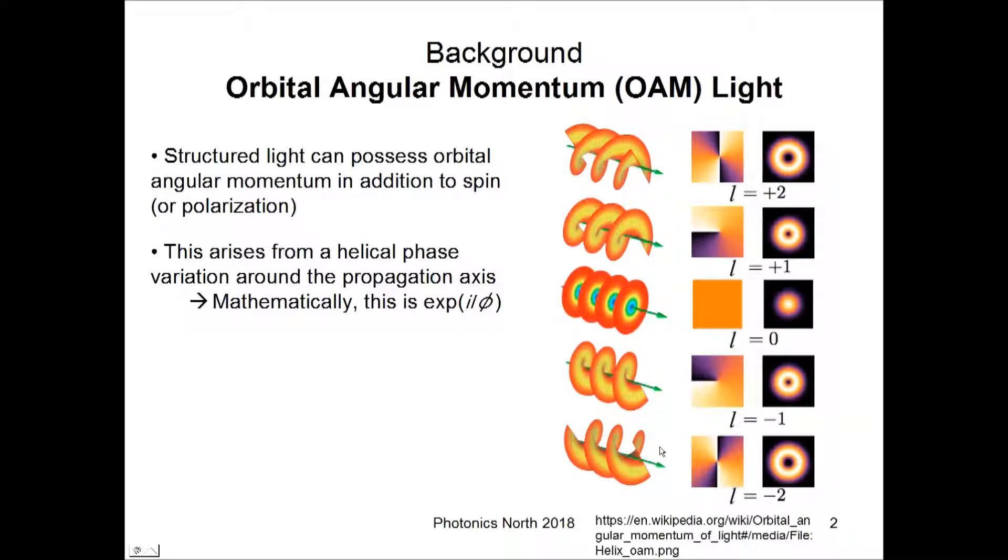In this diagram, you can see an example of a few OAM-containing beams. The helical phase variation is shown here, and the ring-shaped intensity profile for OAM beams is shown over here.